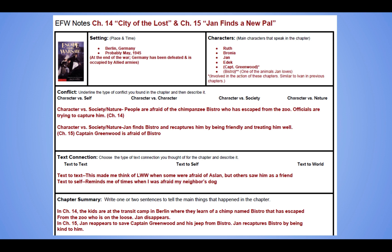Chapter 15 is again character versus society slash character versus nature. Jan finds Bistro and recaptures him by being kind and friendly towards Bistro — he treated him well. Jan is overcoming his concern voiced in chapter 14, basically coming to Bistro's rescue in chapter 15, because he's more concerned about society hurting Bistro than he is about Bistro hurting society. There's also a character versus nature with Captain Greenwood, because he's one of those people who's afraid of Bistro.